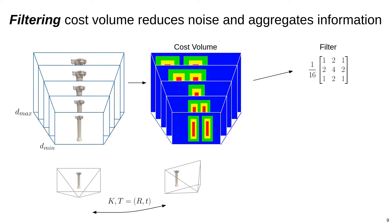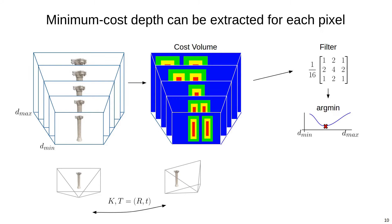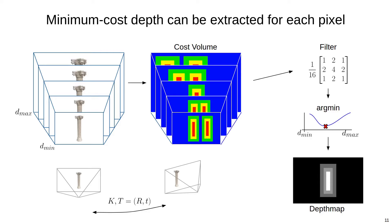Typically, additional filtering is applied to this volume to reduce noise and aggregate cost information. Then the depth that minimizes the cost for each pixel is computed, which yields a dense depth map in the reference frame.